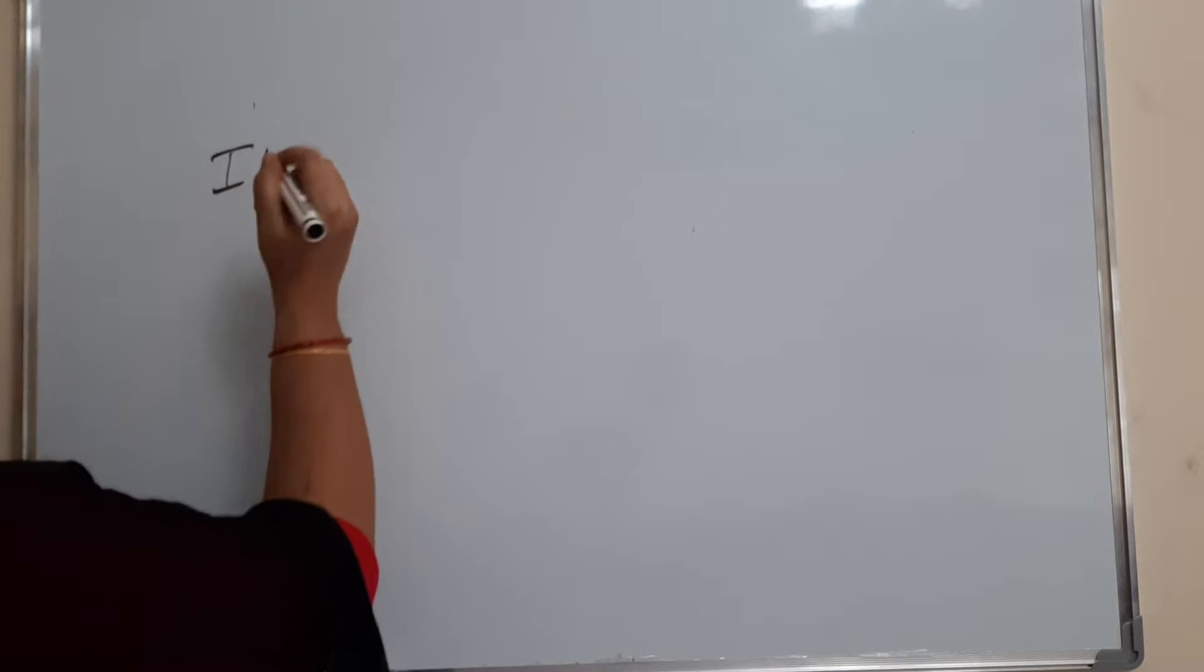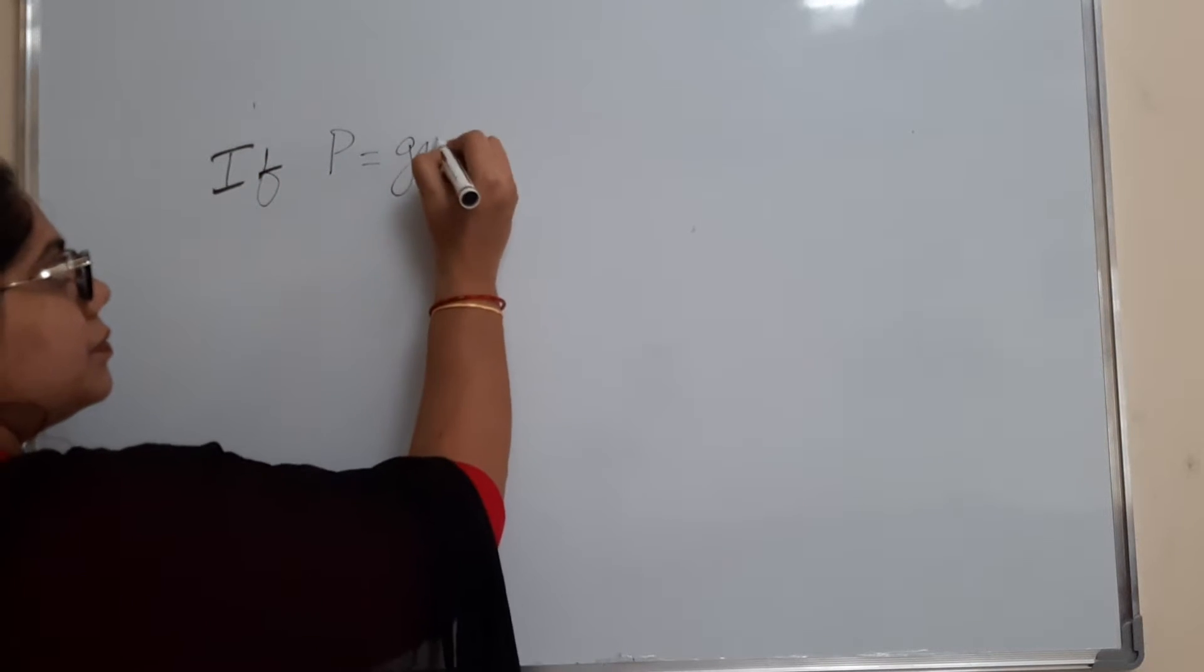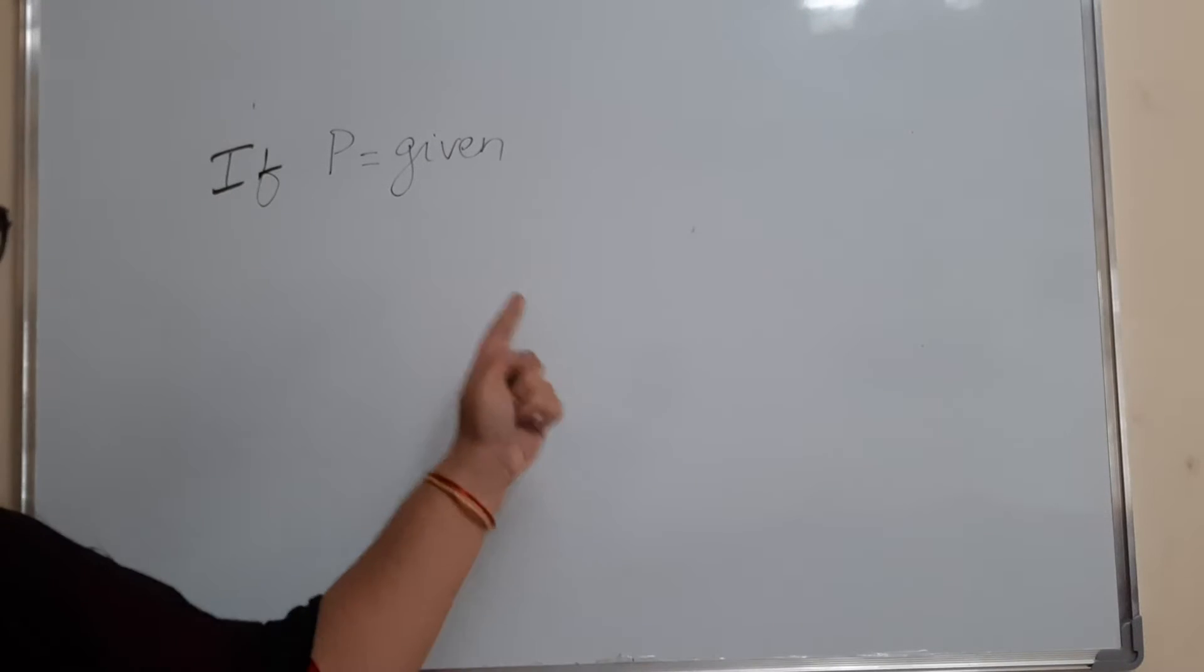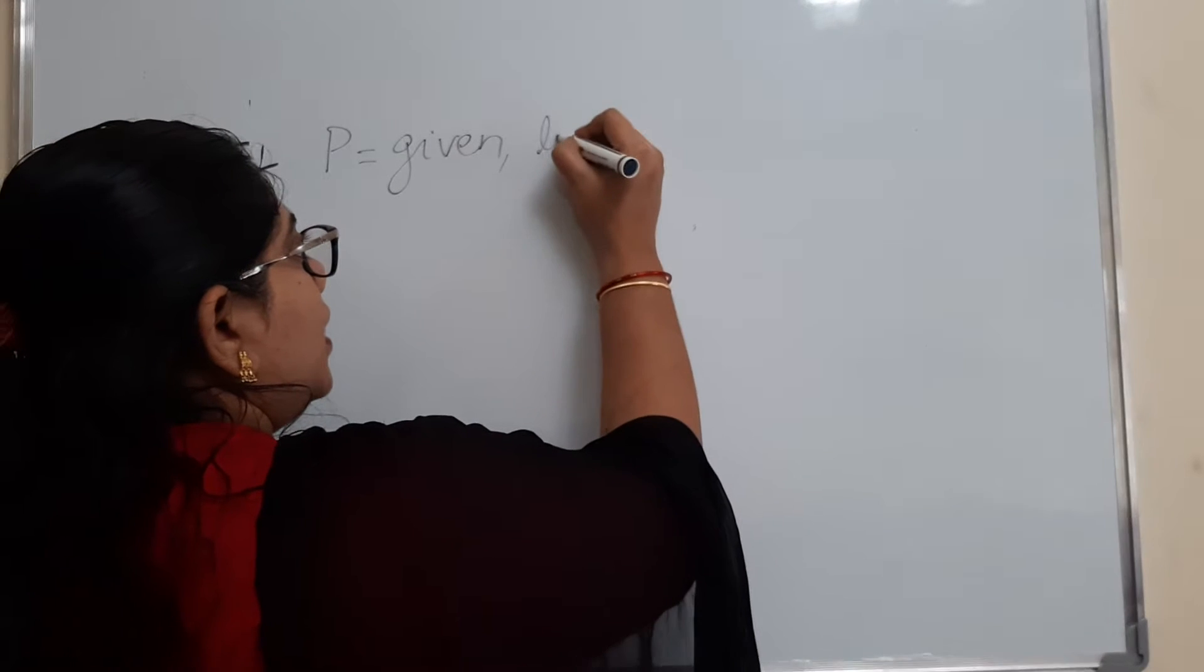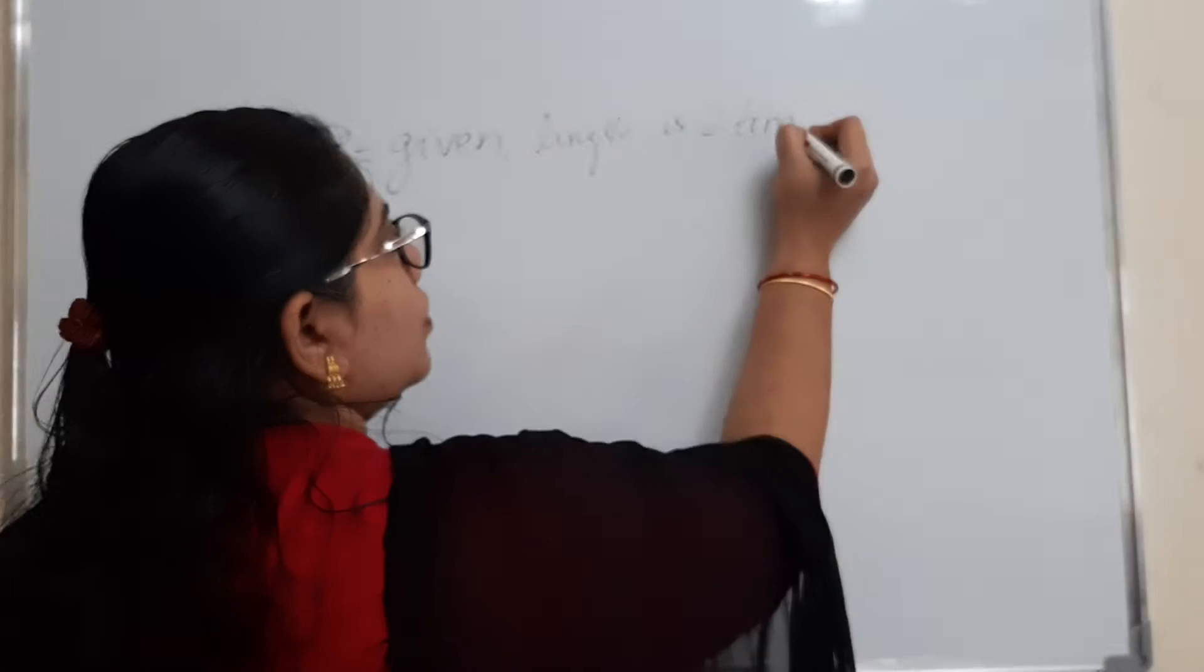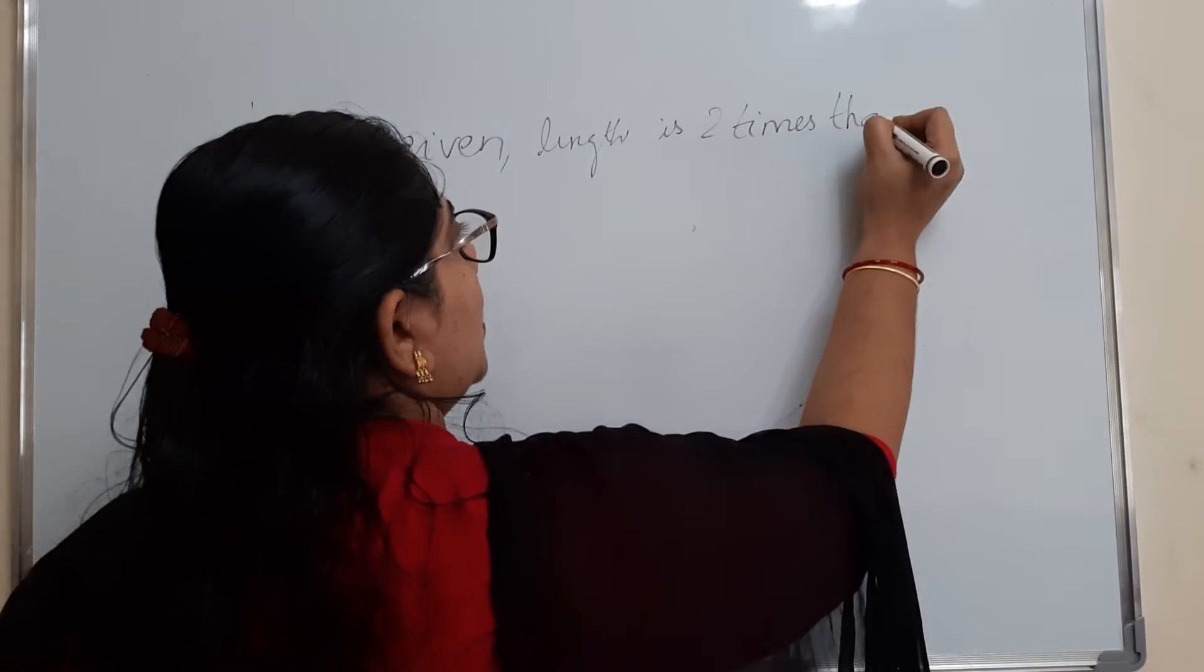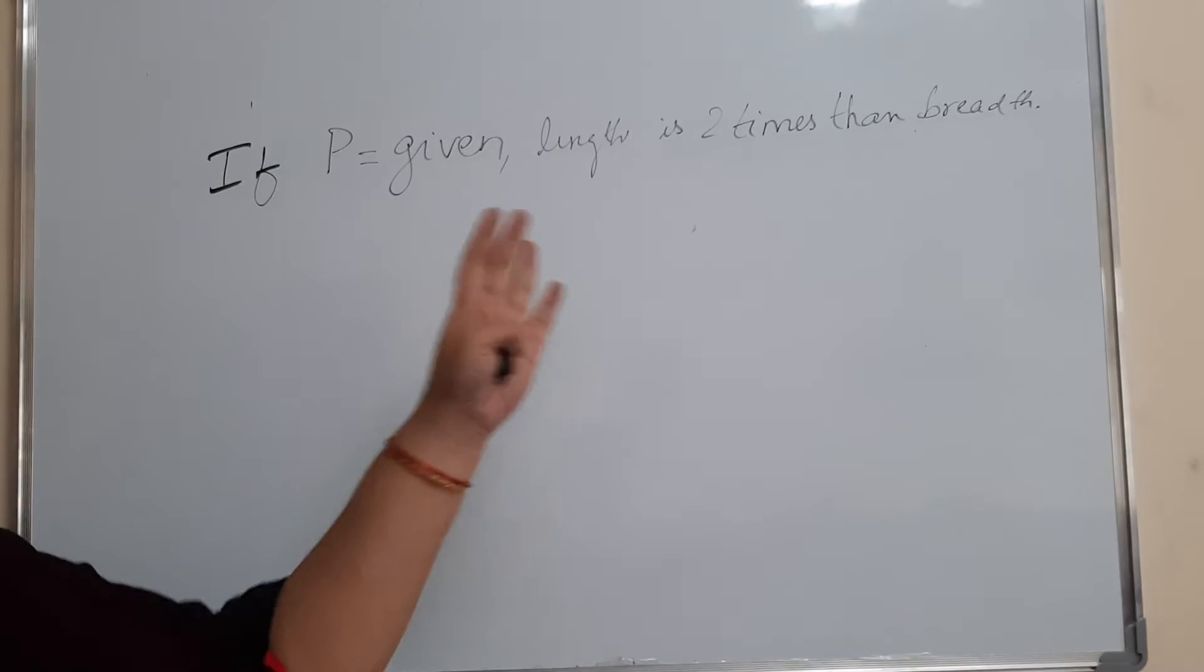Today in algebraic equations, we are going to see problems where the perimeter is given and the length and breadth have a relationship, like if length is 2 times the breadth or 3 times the breadth. This type of question will ask you to find the value of length and breadth.